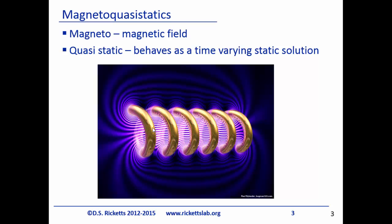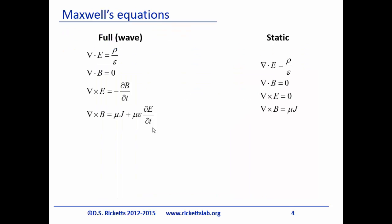I'm going to talk a little bit about magneto quasi-statics — my student actually came up to me and started using this word and I had to look it up and practice saying it. The 'magneto' means we're dealing with magnetic fields, and 'quasi-static' basically means the mathematics and the physics looks just like it does when it's static, but it just changes slowly with time, and that means we can treat all of our problems almost like a static problem, which makes things much simpler.